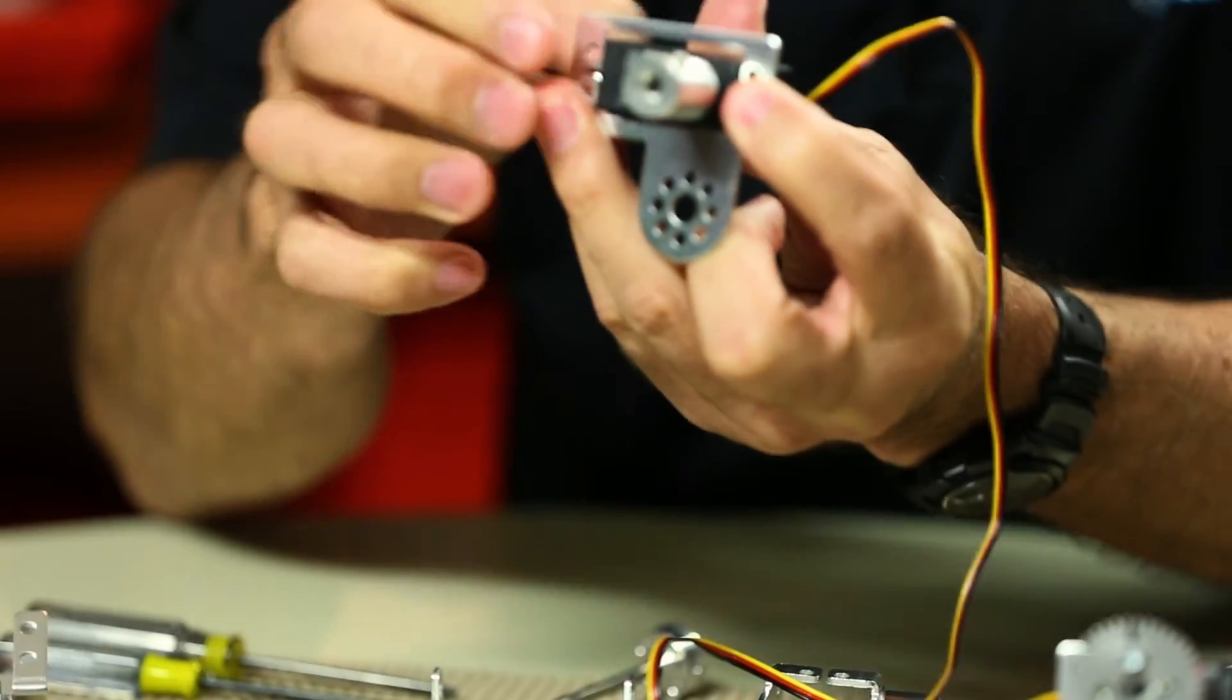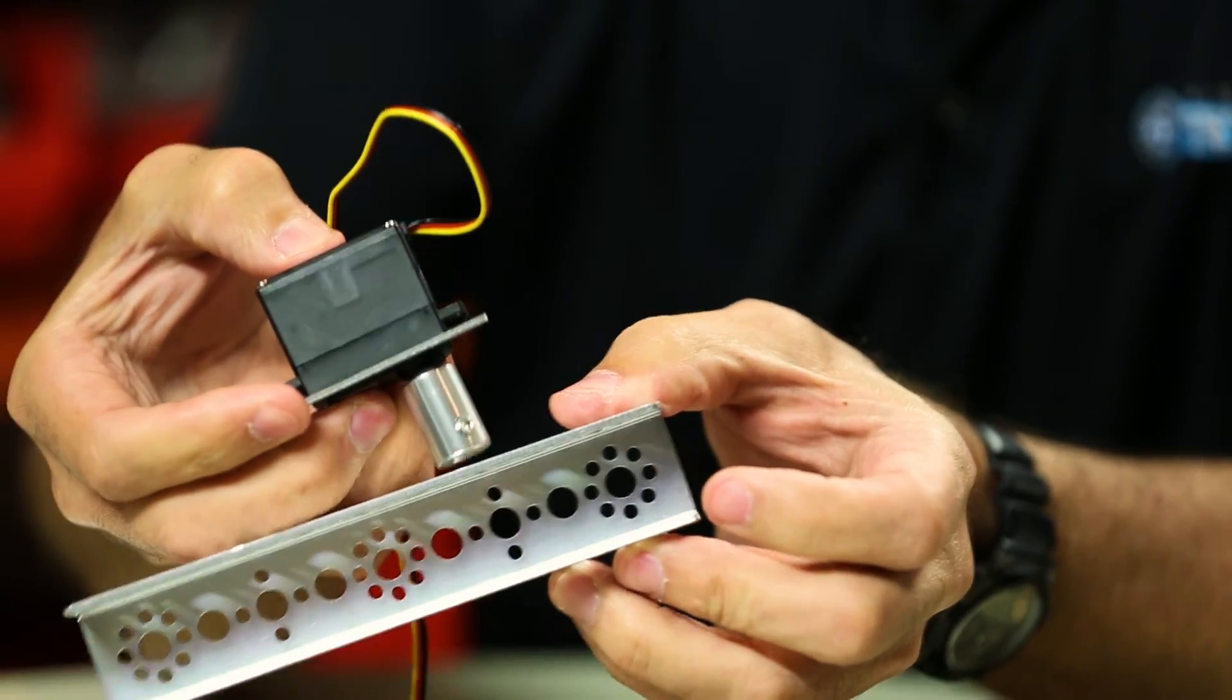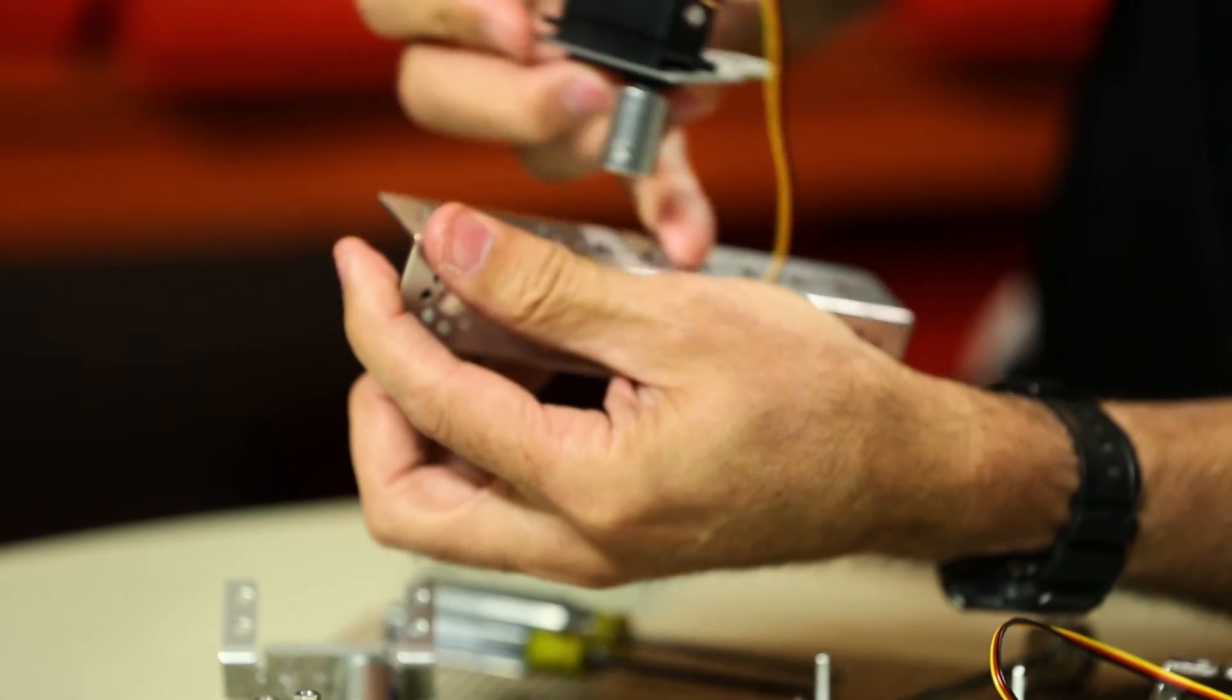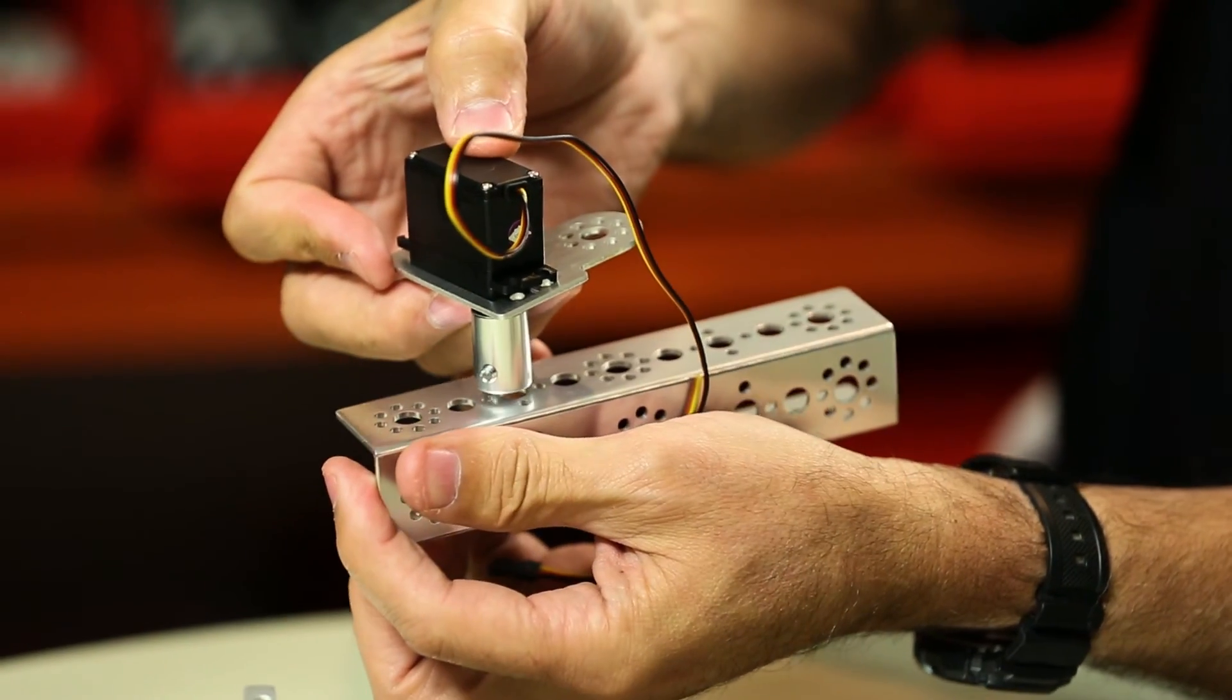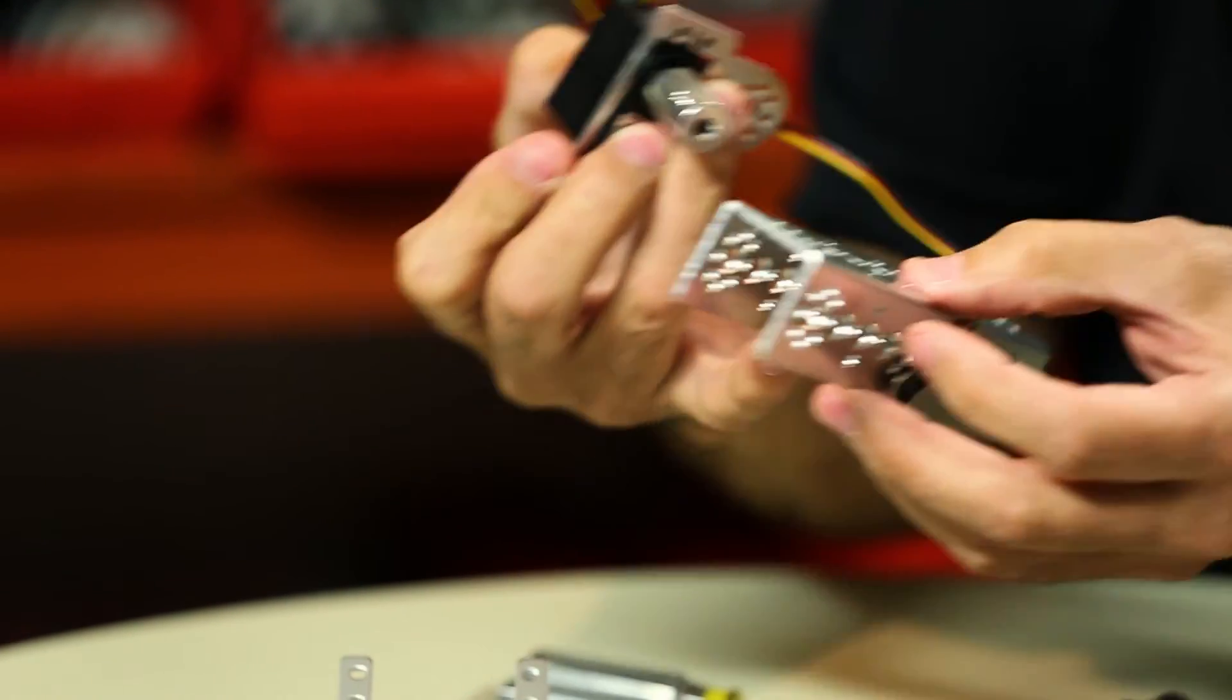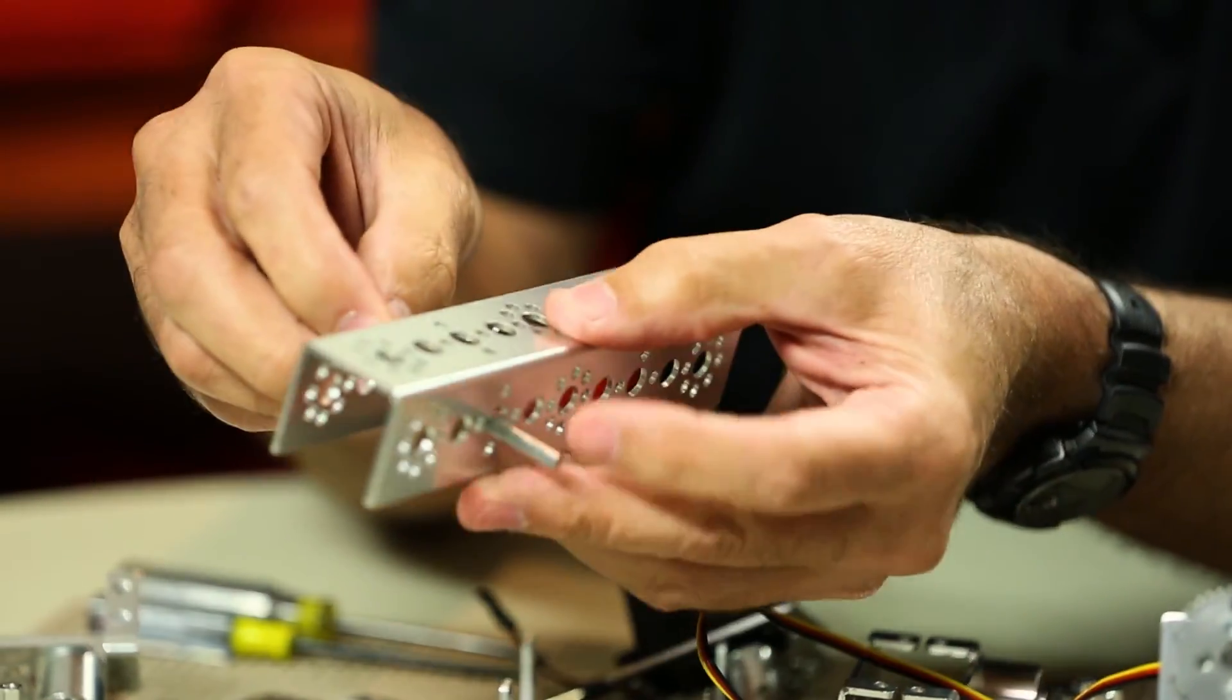And if I use the 32 millimeter standoffs it'll be just the right distance so that that bracket will set right like that, actually just like this because my hole is going to be in alignment with the channel and it's going to line up just like that and then again support the axle through the channel as it goes through.